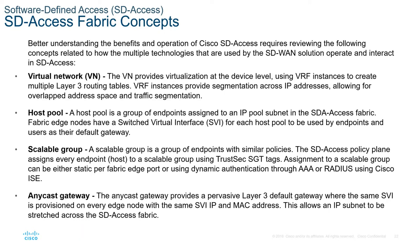Assignment to a scalable group can be either static per port or edge port, or using dynamic authentication via AAA or RADIUS using Cisco ISE. The Anycast gateway provides a pervasive Layer 3 default gateway where the same SVI is provisioned on every edge node with the same SVI IP and MAC address, allowing an IP subnet to be stretched across the SD-Access fabric.